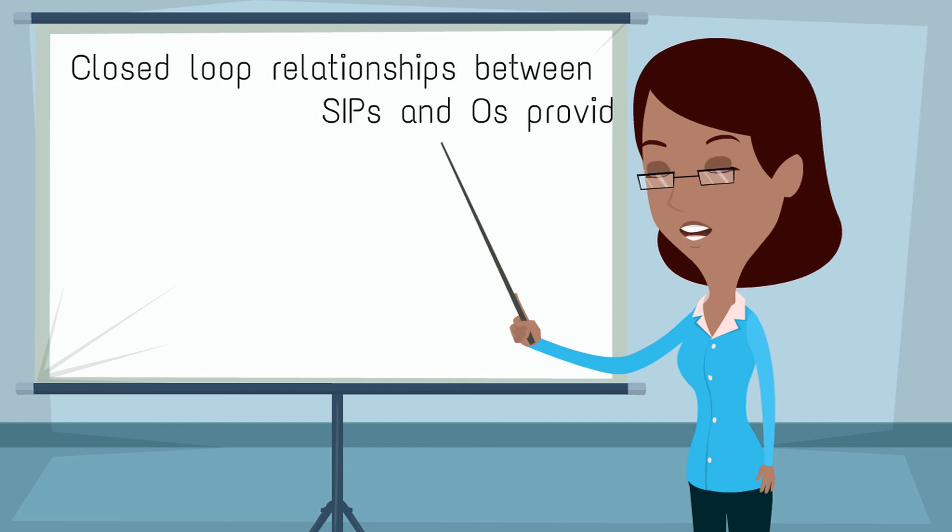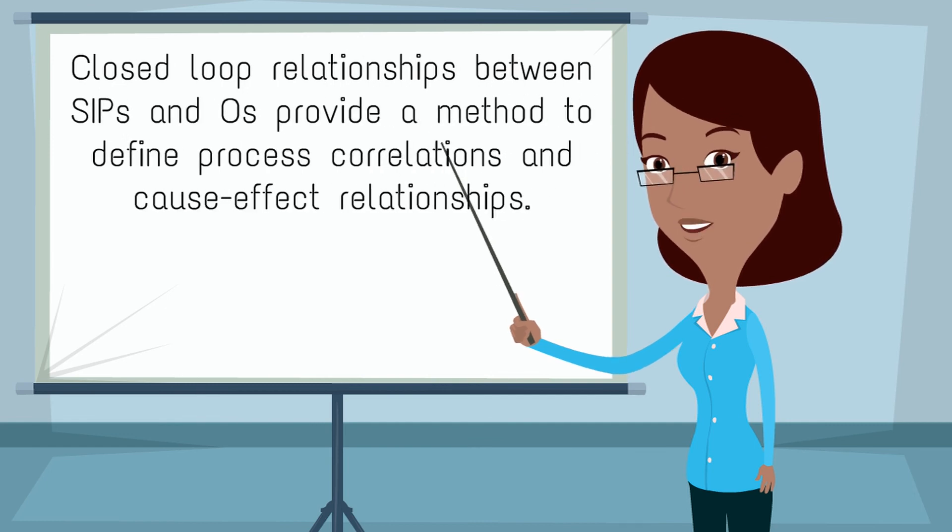Closed-loop relationships between SIPs and O's provide a method to define process correlations and cause-effect relationships.